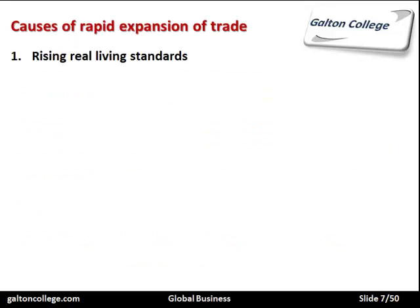First of all, there was an increase in real living standards. By real living standards, I mean the purchasing power of the consumer had increased — incomes received by consumers had gone up faster than rates of inflation, so consumers were able to buy more. Part of the buying process also involved contacts with other countries through holidays and greater awareness of the potential for globalization.